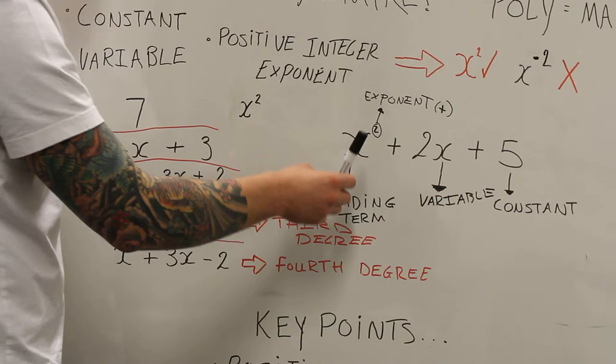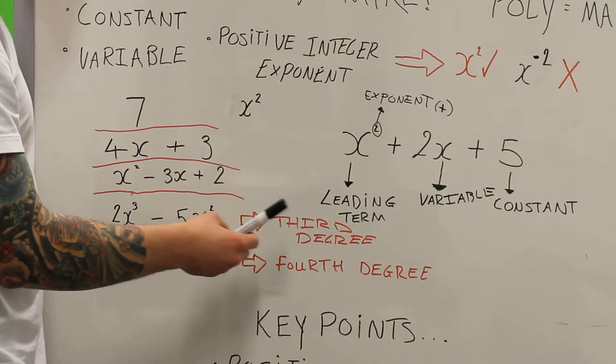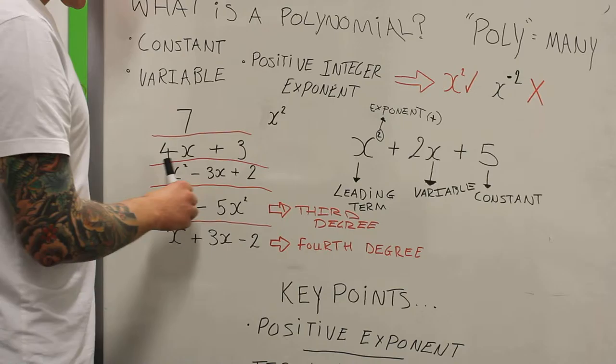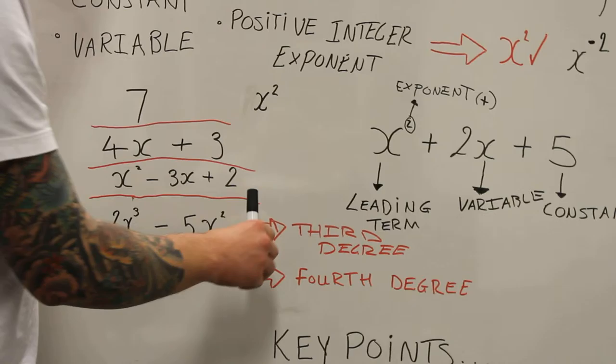In the middle we have the 2x, which the x in this case is the variable. Over here we have the exponent, note that it's a positive value to the power of 2, that's the exponent. Here we have what's known as the leading term, which in a polynomial expression will always be the highest exponent.